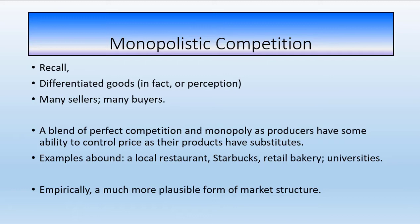There is a blend of perfect competition and monopoly. Producers and firms are trying to differentiate their product so that they have some pricing power — what we call market power. They have some ability to set prices, but there are close substitutes nearby. When they have the ability to set prices they're facing downward sloping demand curves, whereas with perfect competition the demand curve was perfectly flat for a particular firm. That's what market power implies.